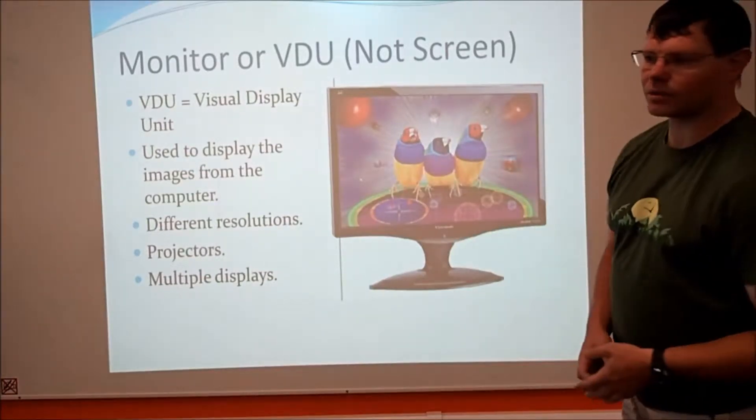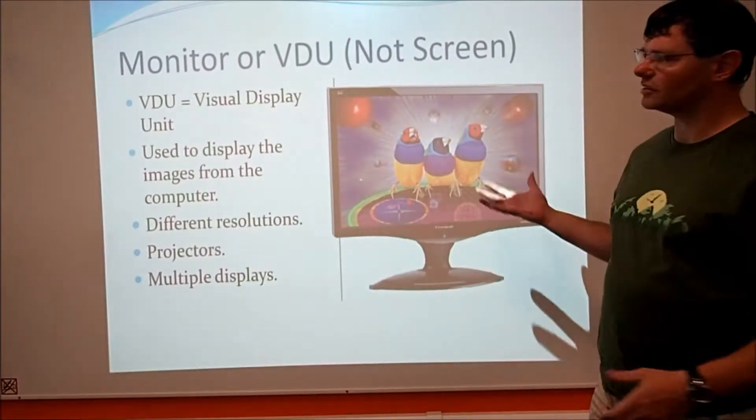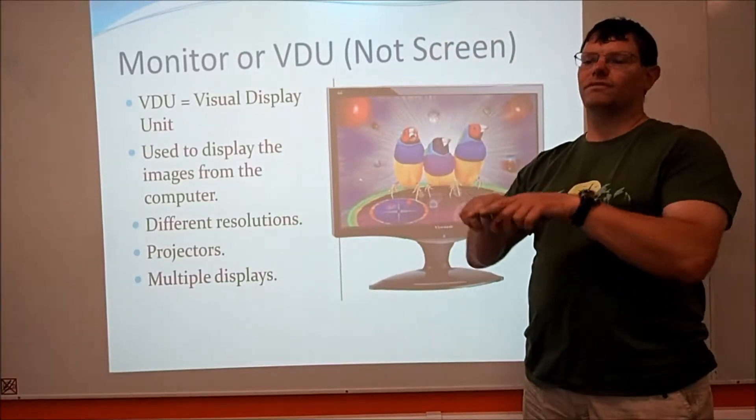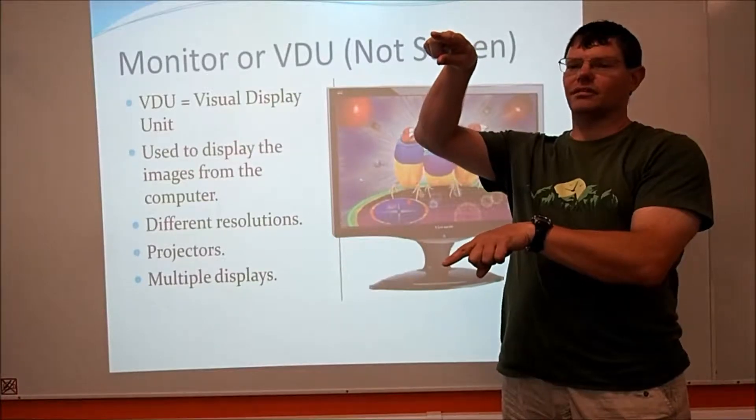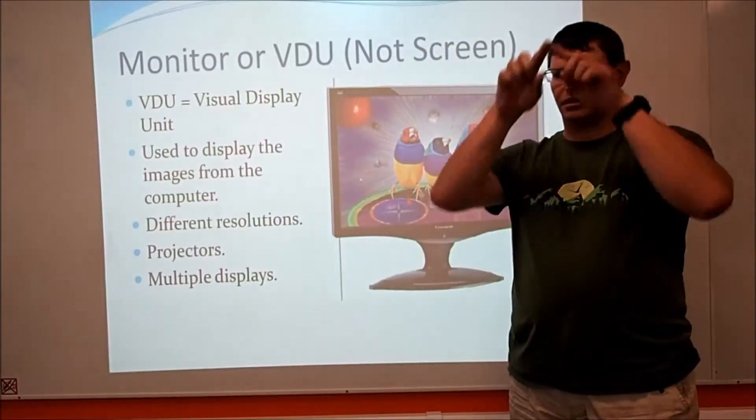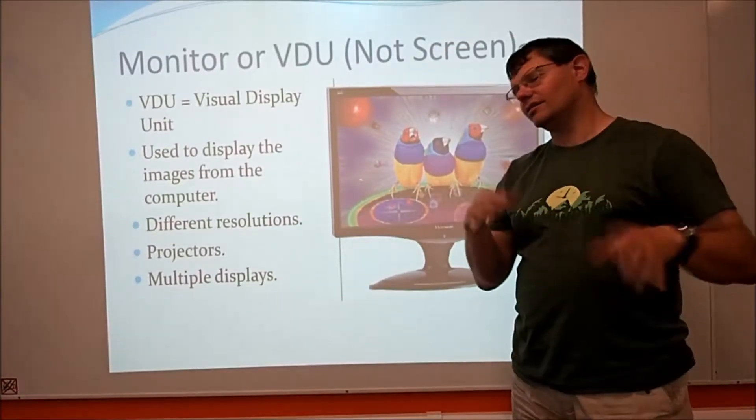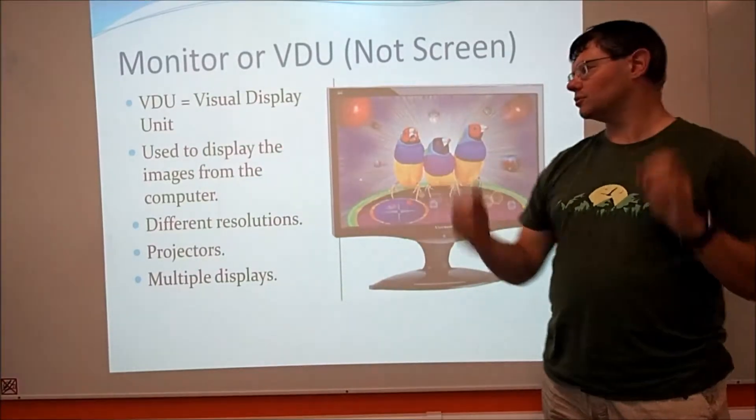Obviously used to display all the images. You can have different resolutions and different sizes. There might be widescreen or four by three. For every three units of height, you have four units of width, which is a normal size screen. Widescreen is nine units and 16 across, 16 by nine instead of four by three.